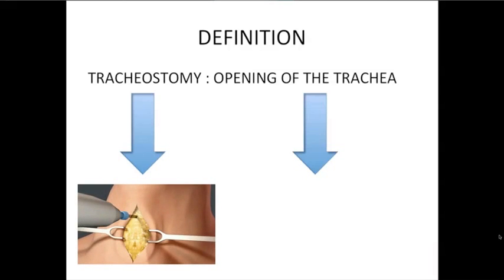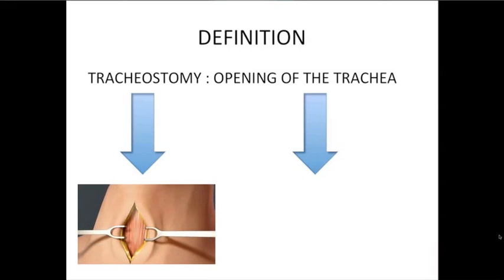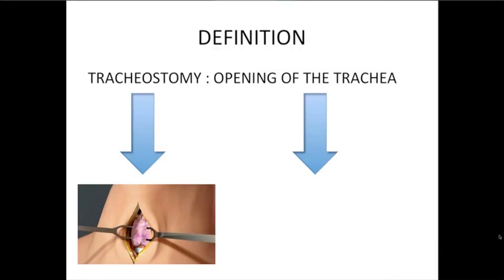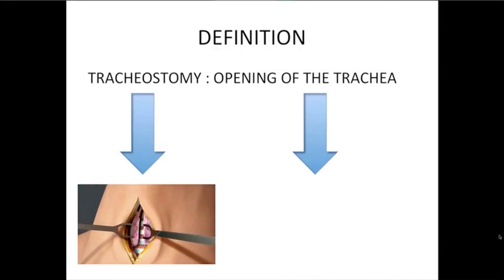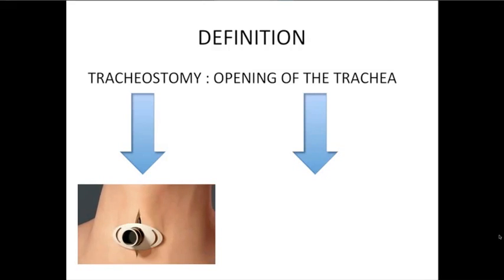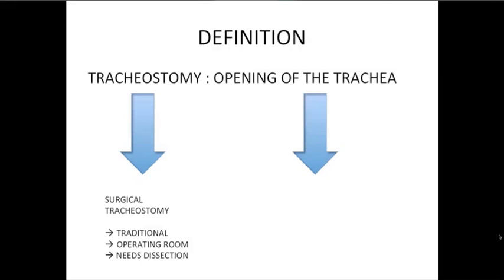Surgical tracheostomy needs dissection of each cervical plane, going from the fascias, then to the muscles, then to the dissection of the isthmus of the thyroid gland, to finish with the opening of the trachea, and finally the placement of a cannula.